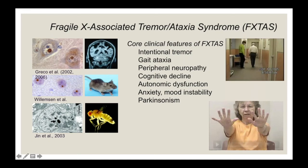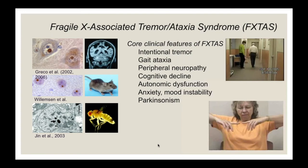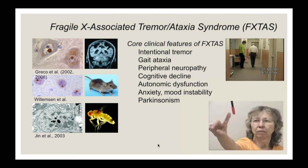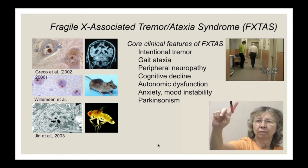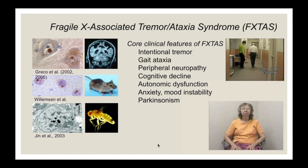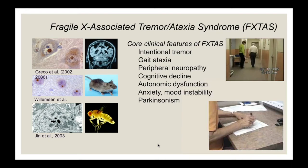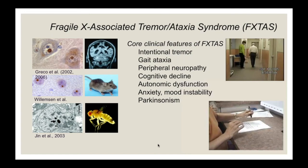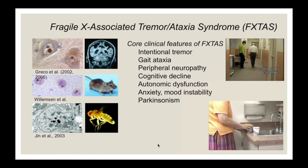A video shows the gait ataxia — patients lose balance and tend to fall. Females are also affected; one female patient is shown with a very severe intentional tremor — not a resting tremor, so when she places her hands in her lap there is no tremor — although some present with parkinsonism. The tremor can be very debilitating for daily function.